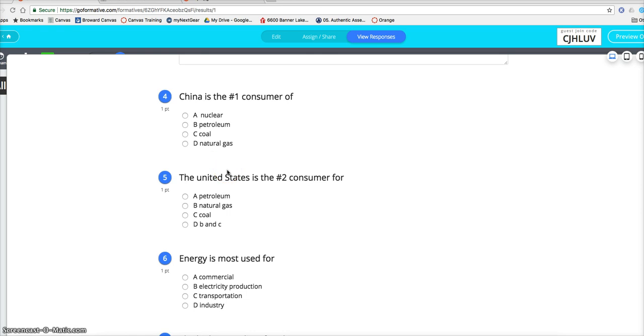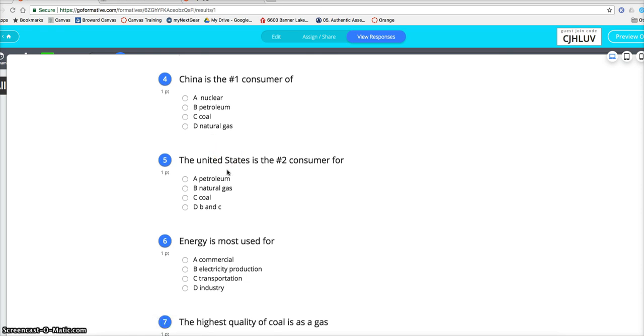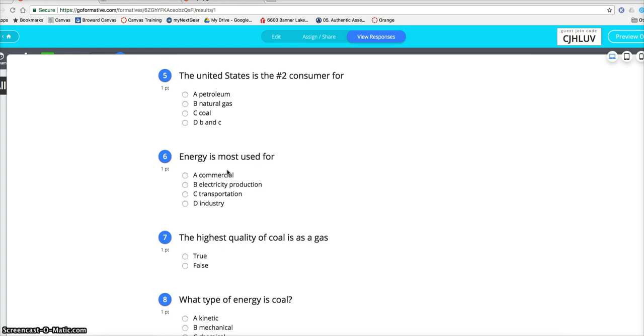Number one for nuclear is Australia. Energy is most used for? Electricity. Second is transportation, and third is a tie between industry and heating and cooking.